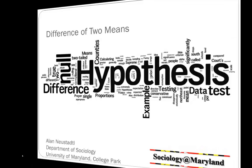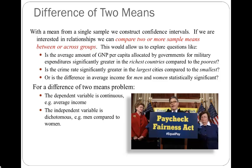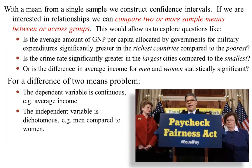We've learned so far that when we have a single sample we calculate a parameter estimate — say an average — and then we establish our degree of confidence or uncertainty about that parameter estimate using confidence intervals. But often we want to compare parameter estimates across two different samples. We might want to compare how the gross national product per capita allocated for military expenditures differs from the richest countries to the poorest countries.